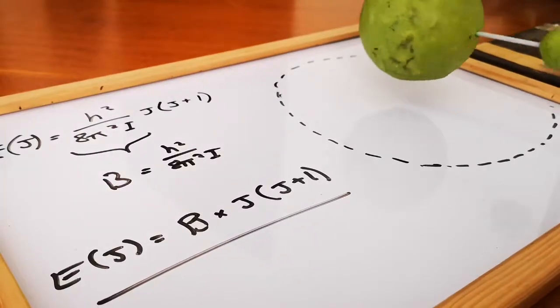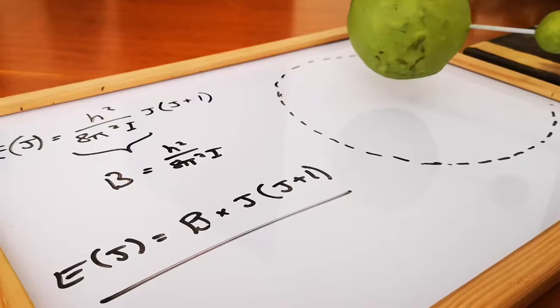The previous video has covered the founding theory of pure rotational spectroscopy. This uses microwave radiation to excite quantised molecular rotations. We also saw some of the equations for how to calculate the energy of these rotational levels and how they can be expressed in terms of the rotational constant b.